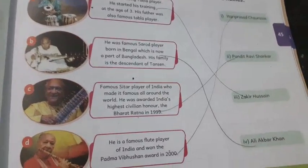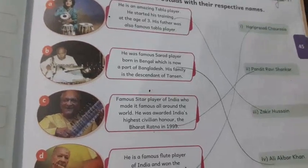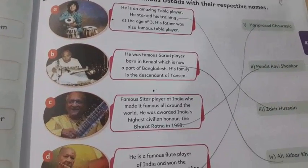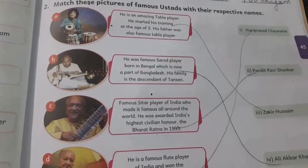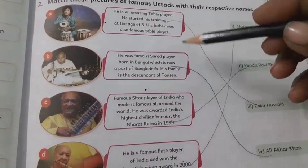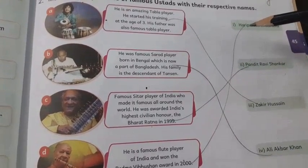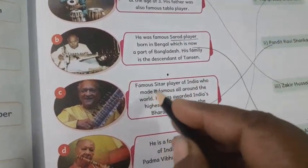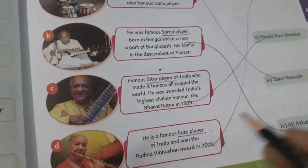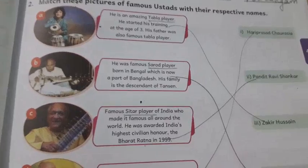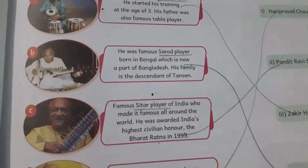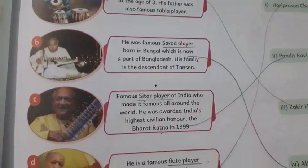So these are all about music and instruments — musical instrument and ustad. Students please write it down on page number 45 and send the picture to me. Please learn these names with their descriptions: tabla player — Zakir Hussain; sarod player — Ali Akbar Khan; sitar player — Pandit Ravi Shankar; and flute player — Hari Prasad Chaurasia. Is tarah se aapko learn karna hai — unke naam bhi. And you should also recognize their faces.